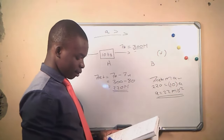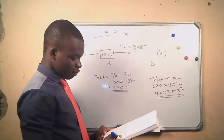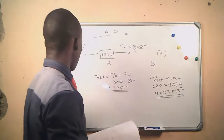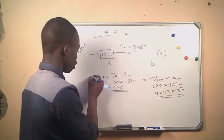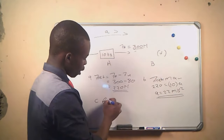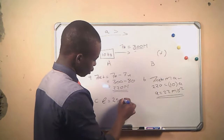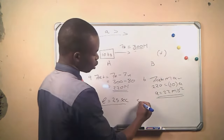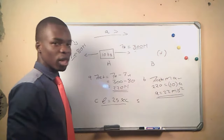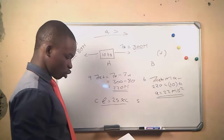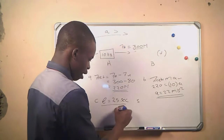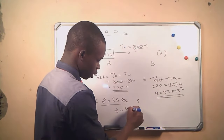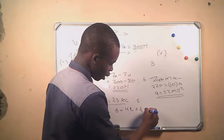Now we go to number C: what will be the distance travelled by the body after 25 seconds? We are given the time as 25 seconds, and we are asked to calculate the distance S. We will use one of the equations of motion: S equals ut plus half a t squared.